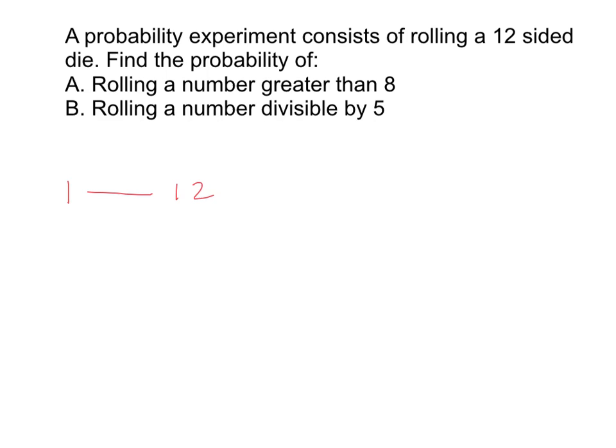obviously our list of simple events, we could get the numbers anywhere from 1 to 12. So there are 12 possible outcomes for that probability experiment. Now, number A, letter A says, what's the probability of rolling a number greater than 8? So if we're going to make our classical probability, we create a fraction. Our total number of outcomes is our denominator.